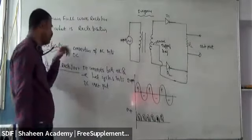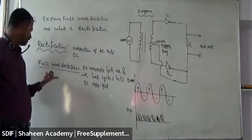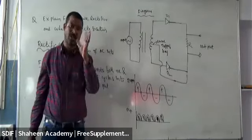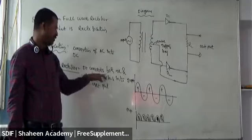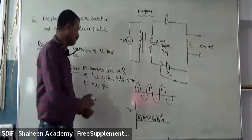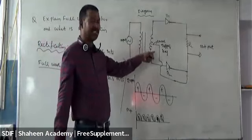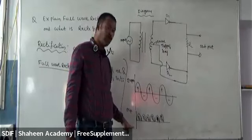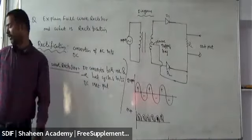In the answer, you need to cover: the definition of rectification, what is a full wave rectifier, that it converts both positive and negative cycles into DC output, then the circuit diagram with the center-tapped transformer, D1, D2, RL load resistor, and both the input and output waveforms.